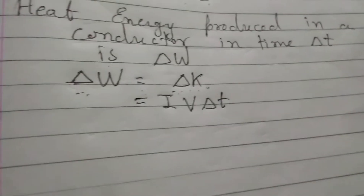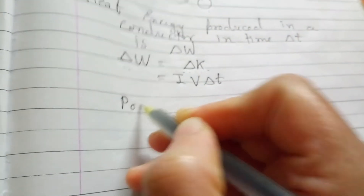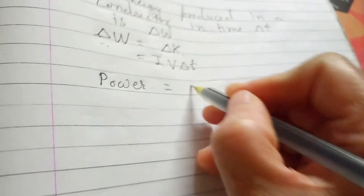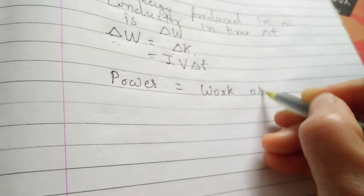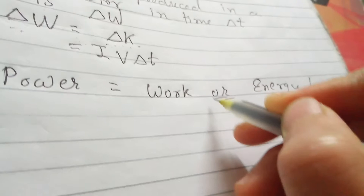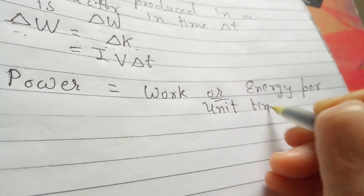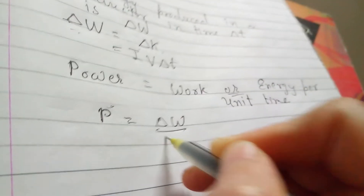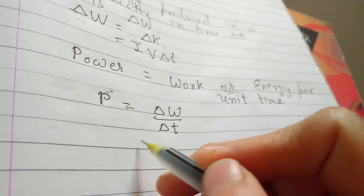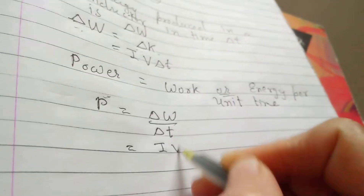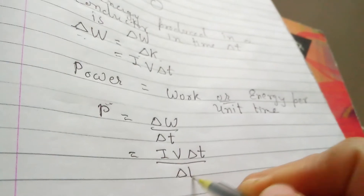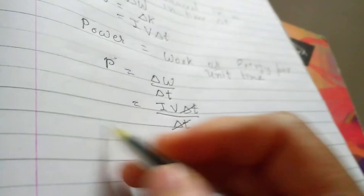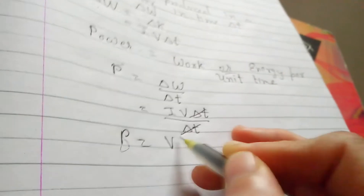From this, we can derive the equation for power, because power equals work or energy per unit time. In mathematical form, power P equals ΔW divided by ΔT, which equals IV·ΔT divided by ΔT. The ΔT cancels, so our equation for power is P equals VI.